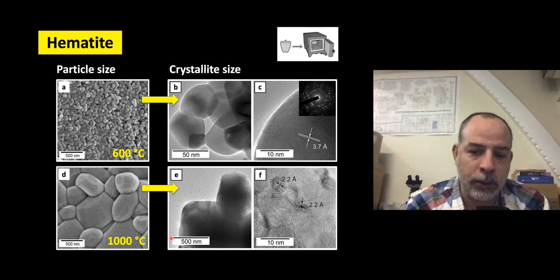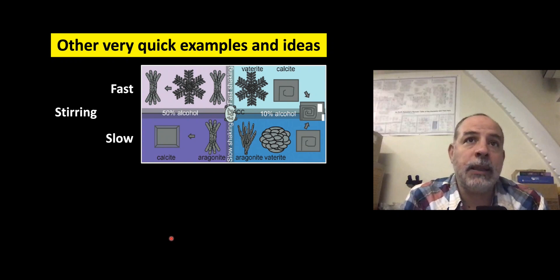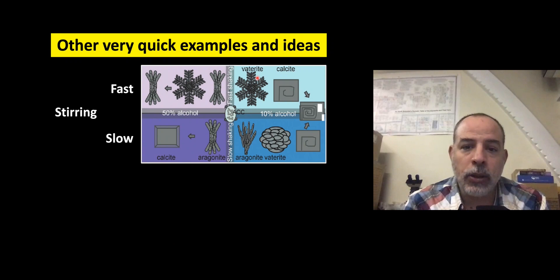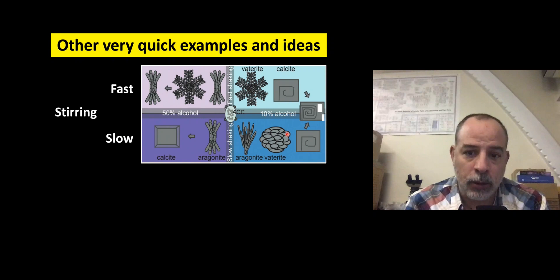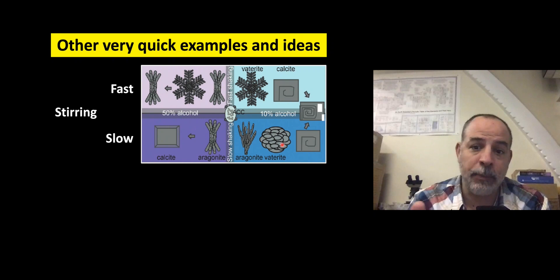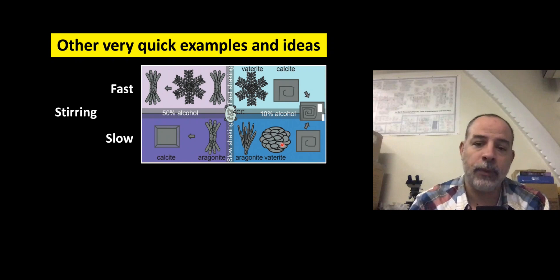Stirring — something we might not care about — can be crucial for the production of some calcium carbonate polymorphs. Here you see a diagram showing different morphologies of calcium carbonate polymorphs like vaterite, calcite, and aragonite. It is not the same if you shake the experiment very slowly or very quickly. We were producing calcium carbonate in the presence of alcohols: the top examples used fast shaking and the bottom ones very slow shaking. The morphologies and even the polymorphs can be completely different depending only on shaking.